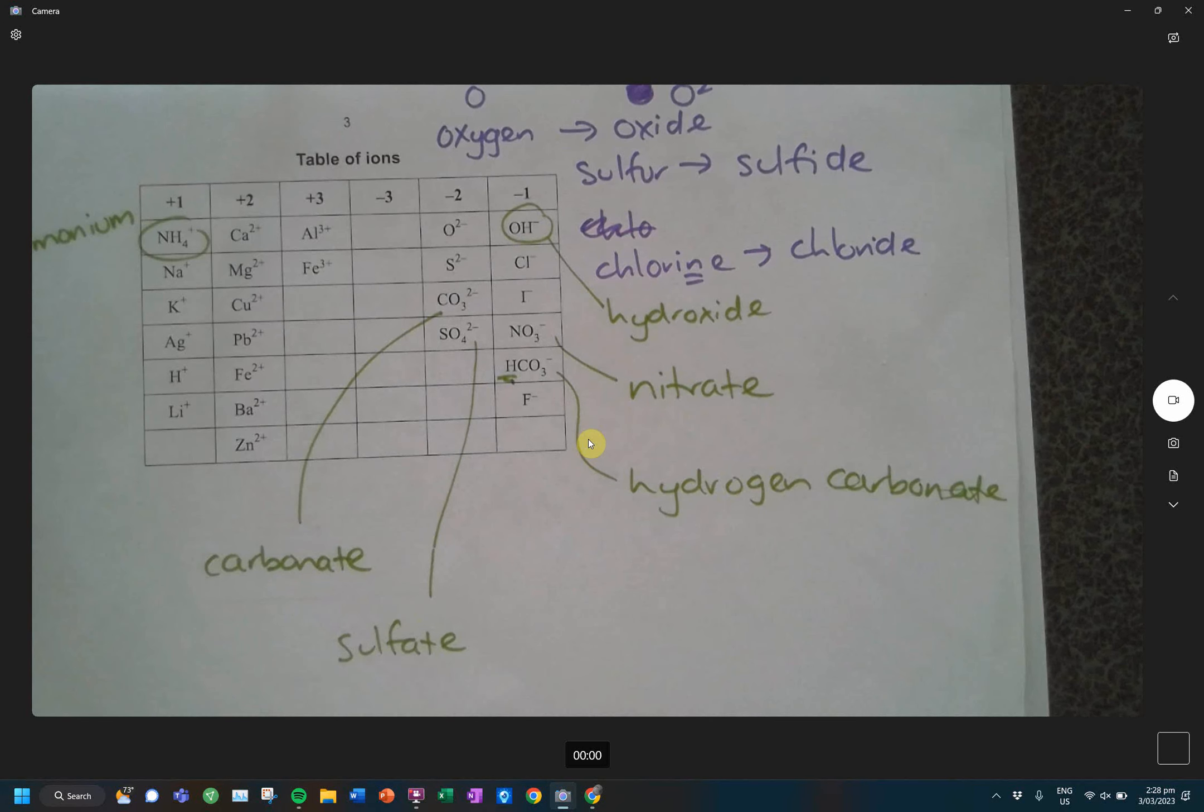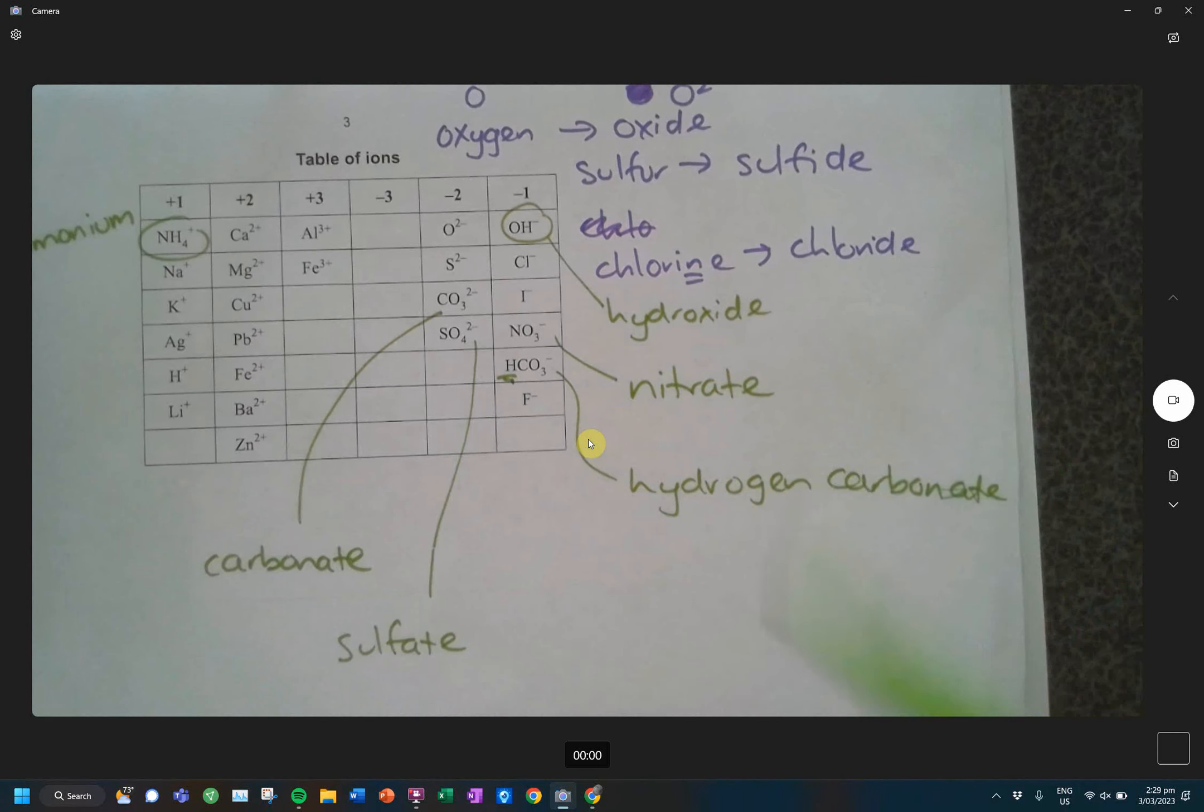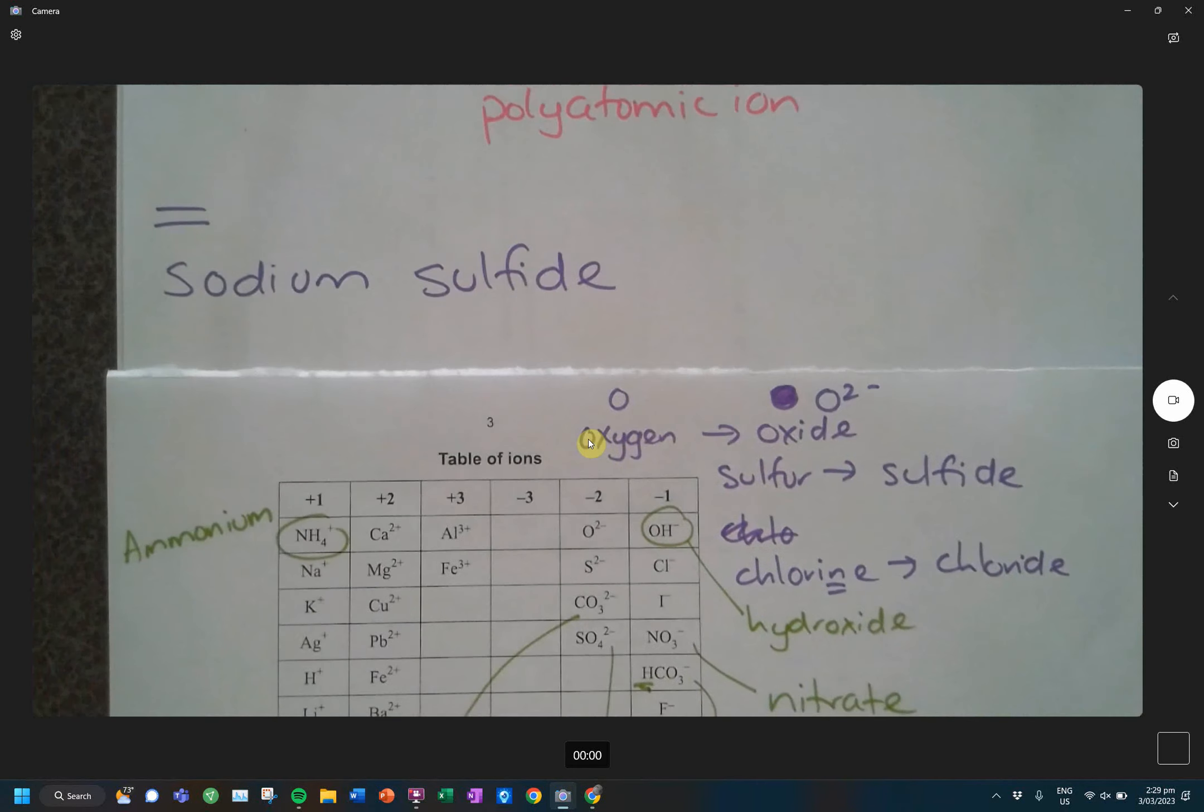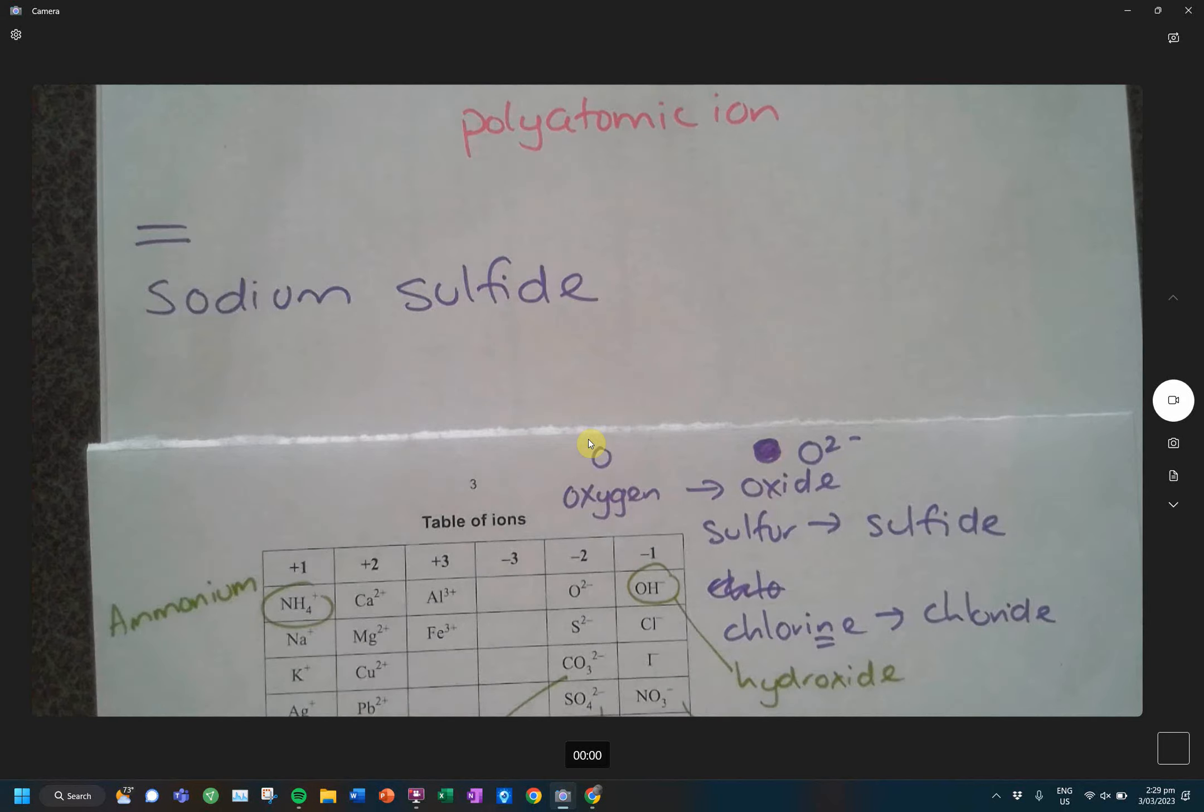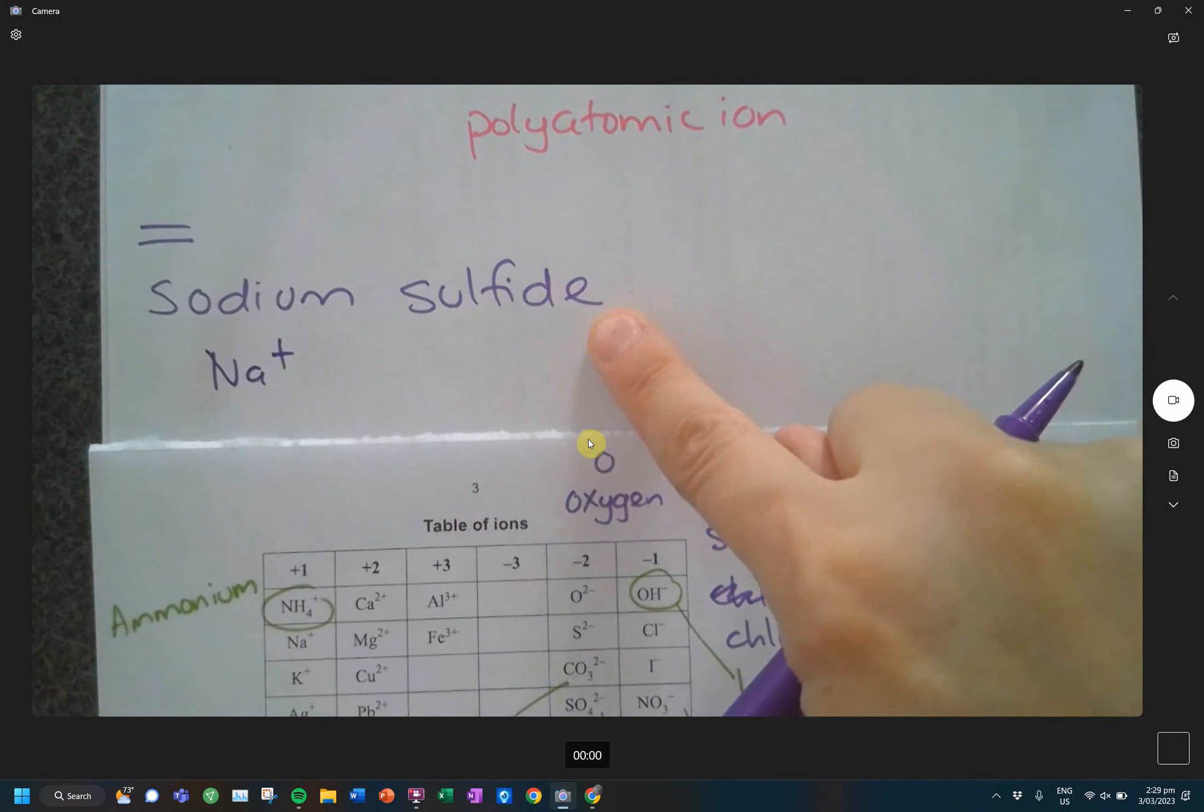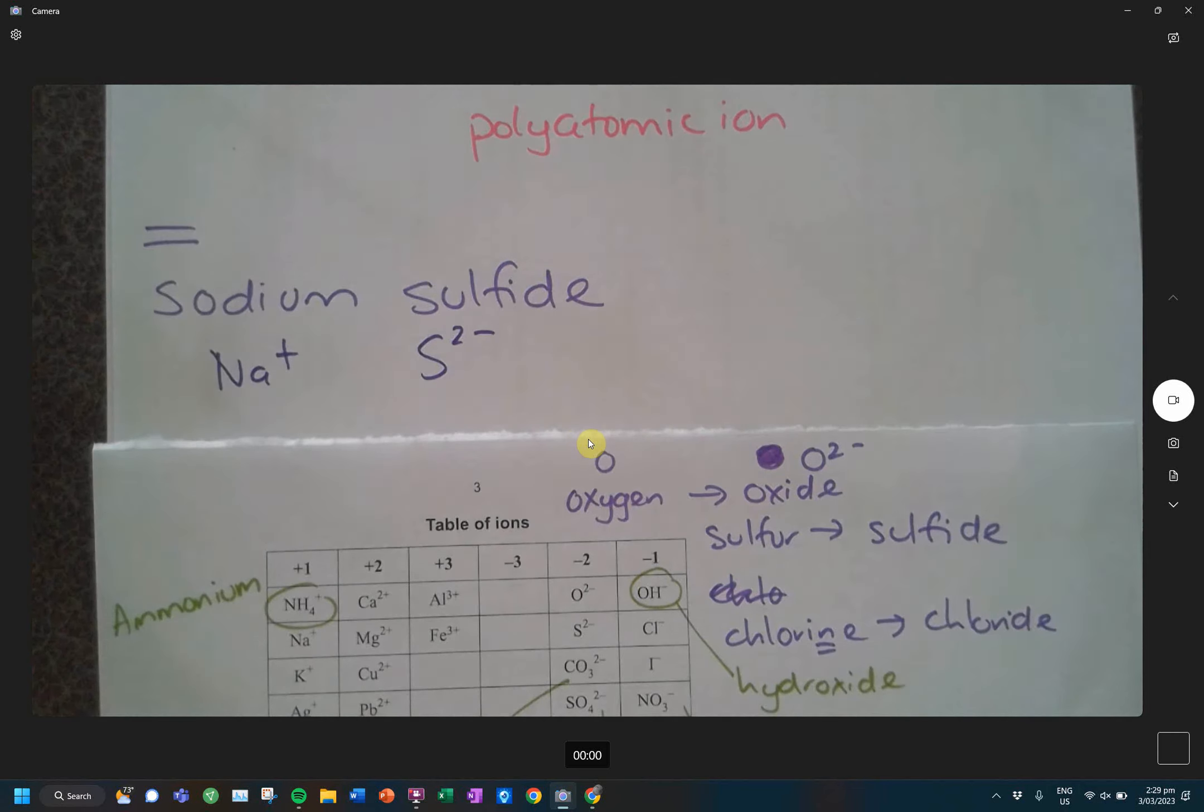Questions, concerns, comments, are we okay? Now that we know that information, we can work with sodium sulfide. So sodium is my Na+, and my sulfide is the S2-. Now, something to remember with ionic compounds is that the ionic compound, the charges need to add to zero.